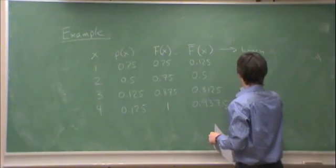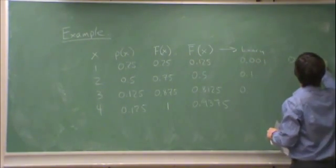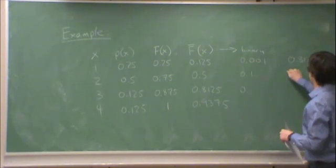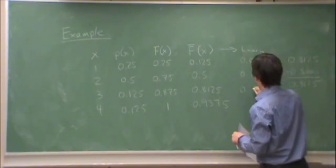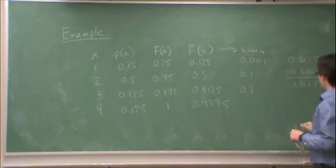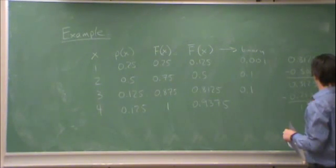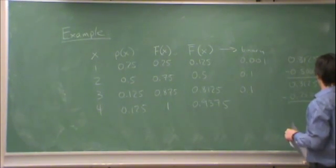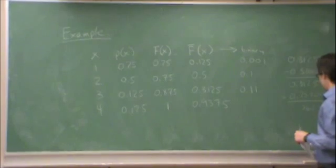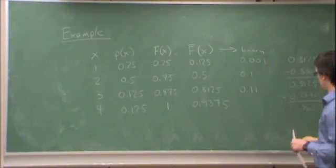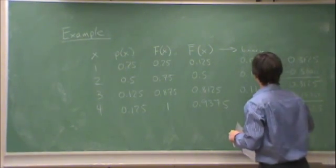0.8125 in binary, okay let's work that out together. I have 1/2, I have 1/4. I have 0 in the 1/8 position, and in the 1/16 position I have 1. This is 1/16, and that's it.